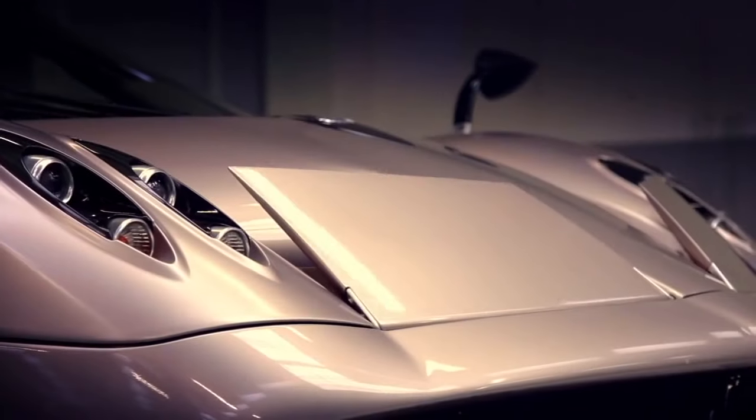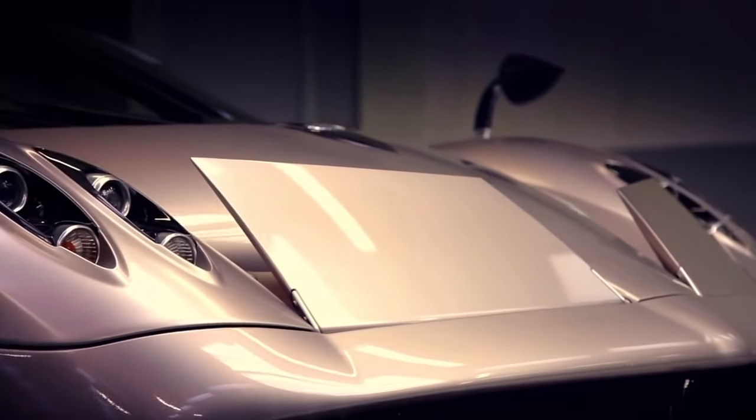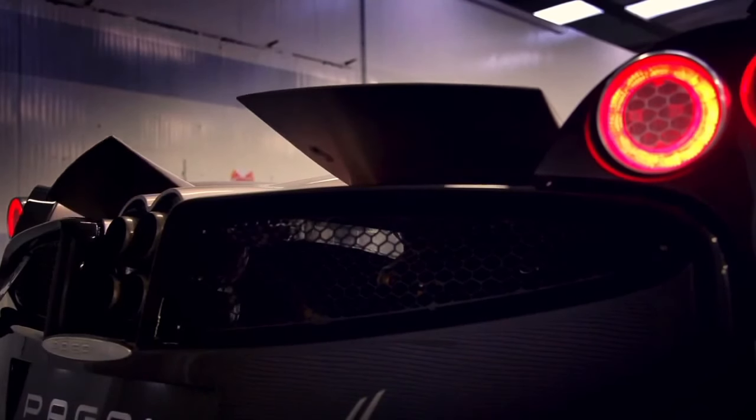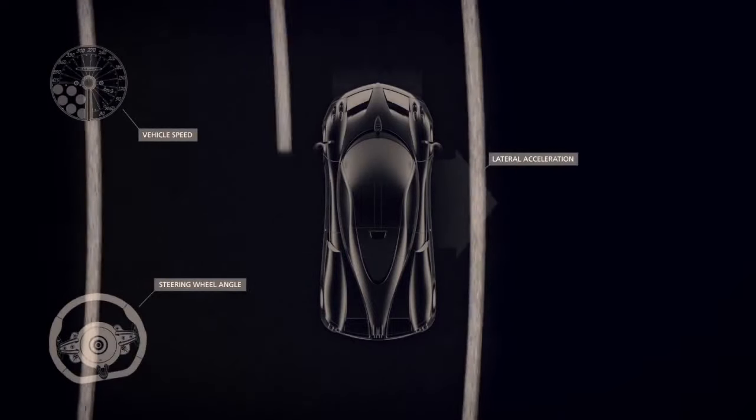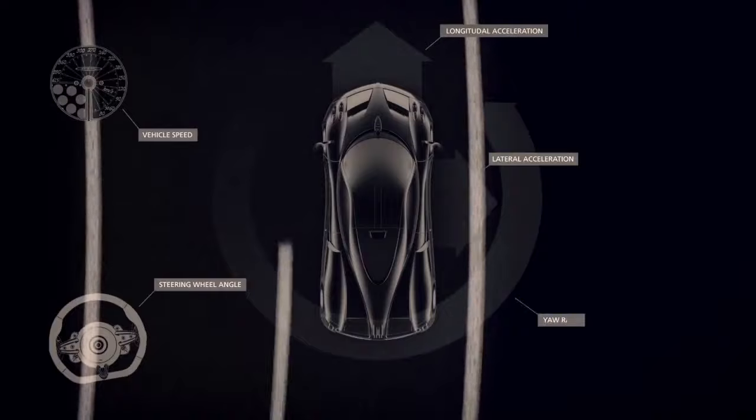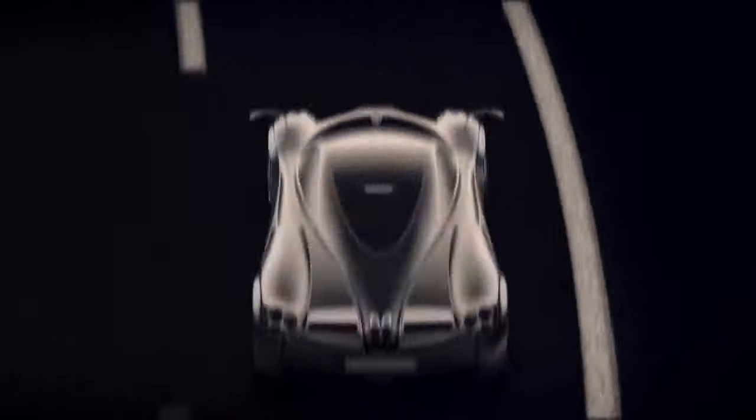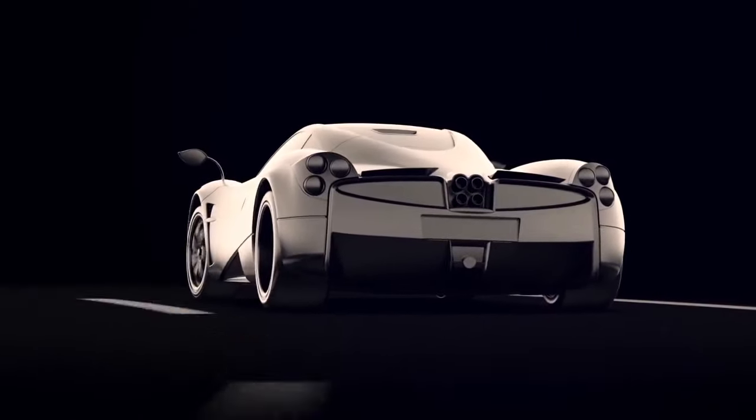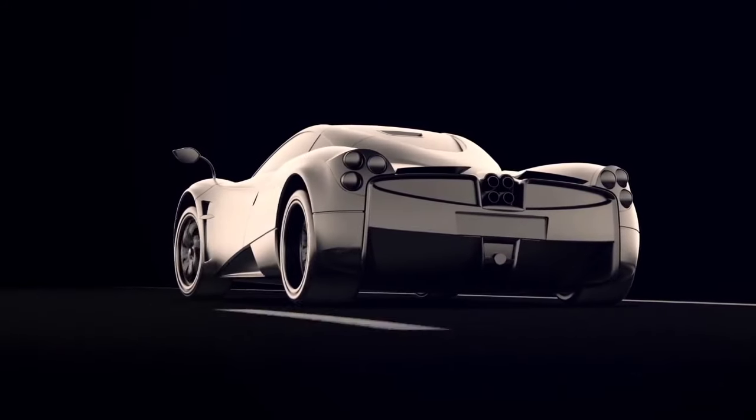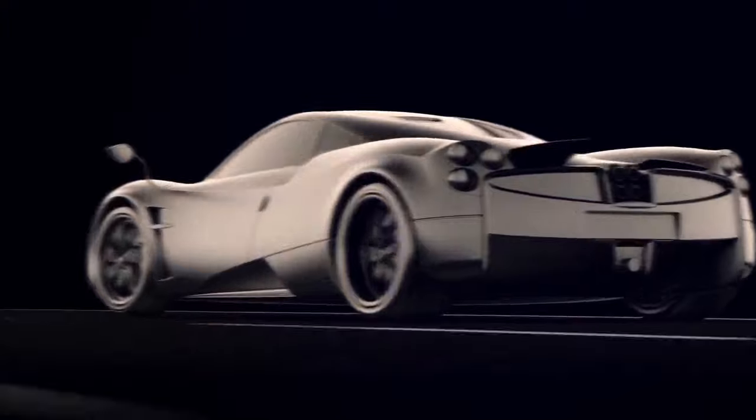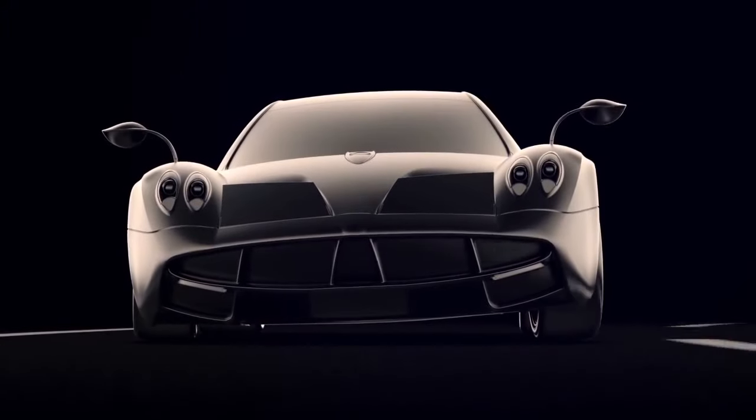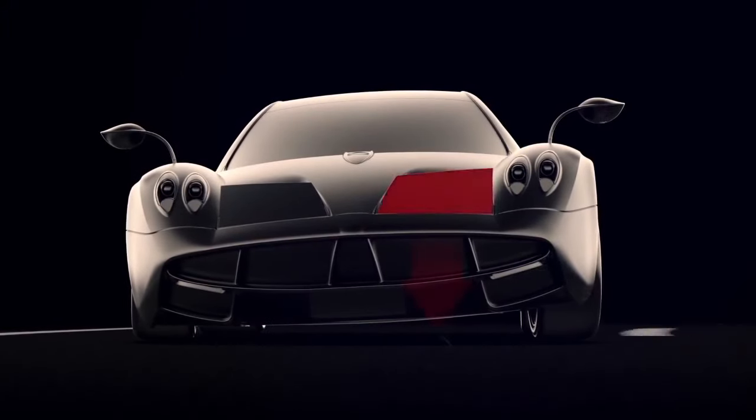The Huayra features active aerodynamics. A control unit monitors the behavior of the car, reading the values for speed, steering angle, lateral and longitudinal acceleration, and yaw rate. In milliseconds, the system determines which of the four wheels requires additional downforce to balance the car and individually actuates four aerodynamic surfaces.